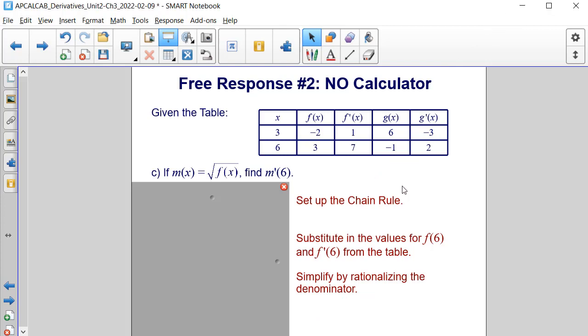Now let's look at part C. If m of x is equal to the square root of f of x, find m prime of 6. Well, the first thing that we can do is we can rewrite m of x with exponents. It is equal to f of x being raised to the 1 half power.